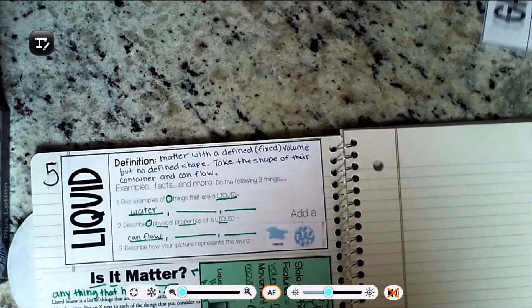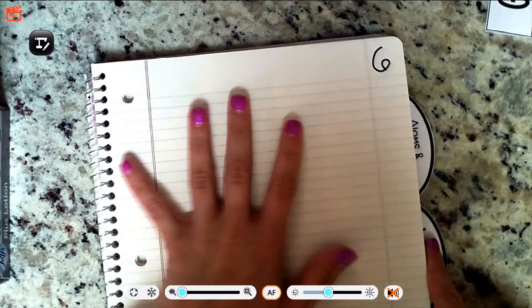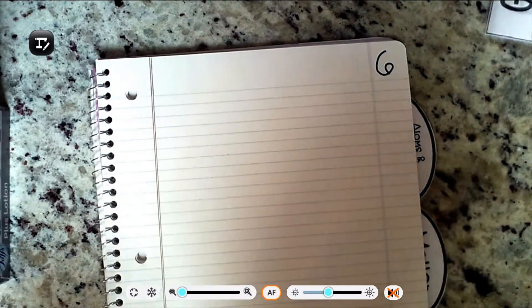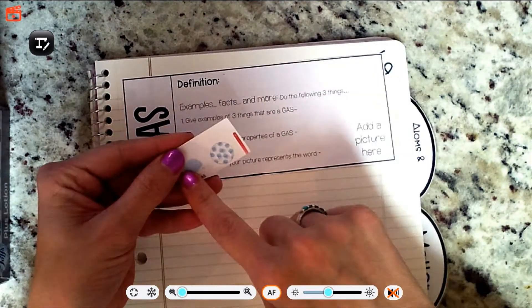Okay, so in this video we're working on page 6. We had page 5 about liquid, now we're going to start on page 6 about gas. You're going to need the definition for gas. Picture is the last part of this one. It's got three parts.